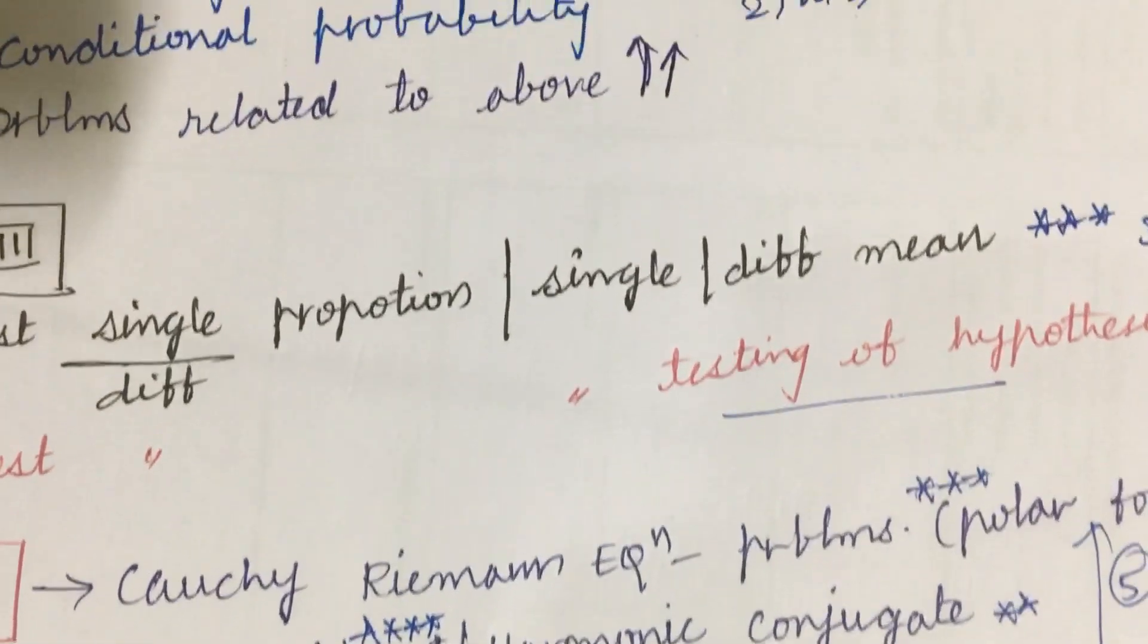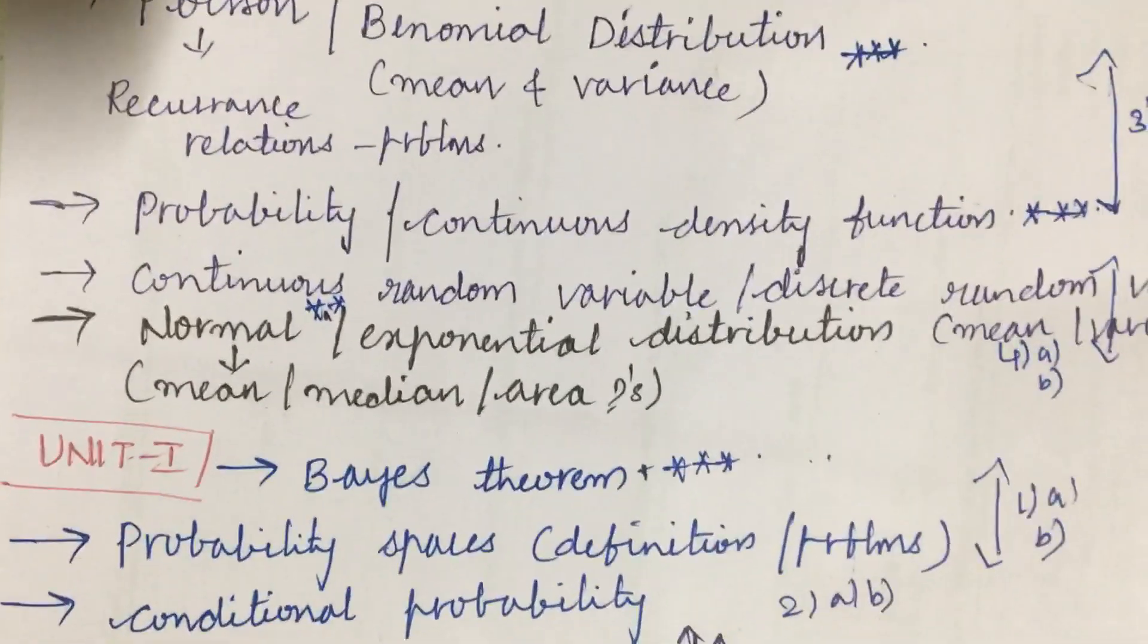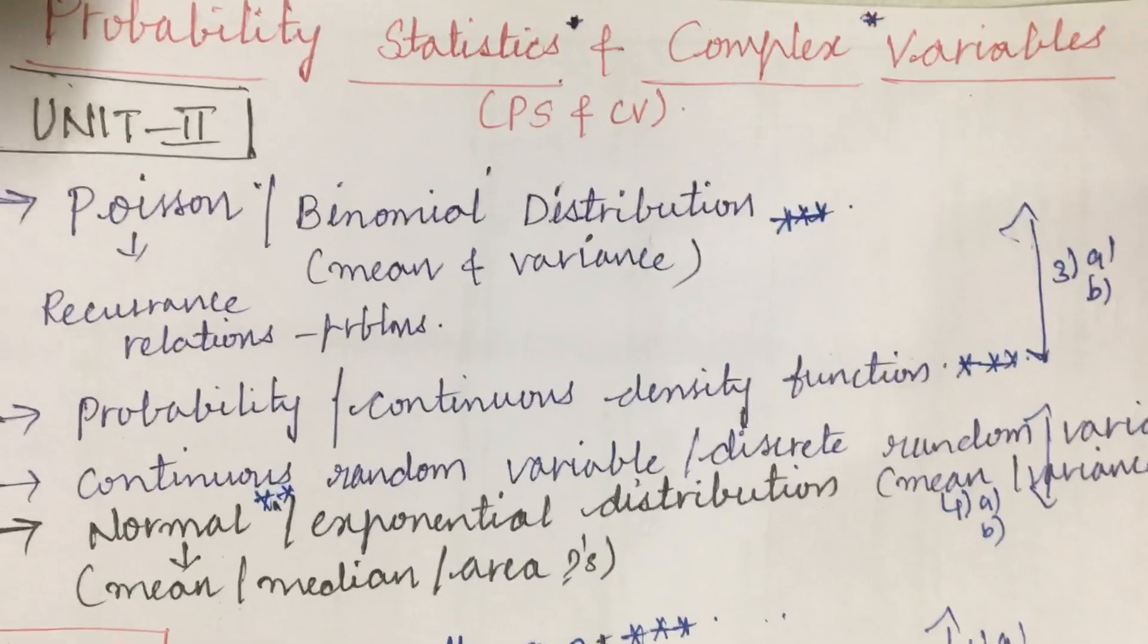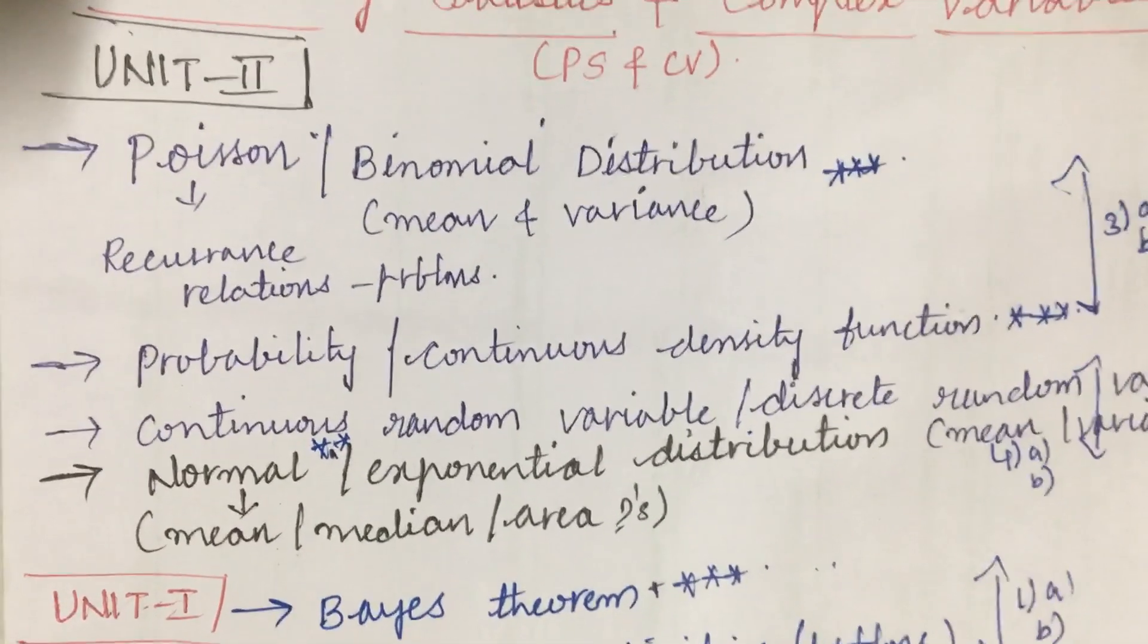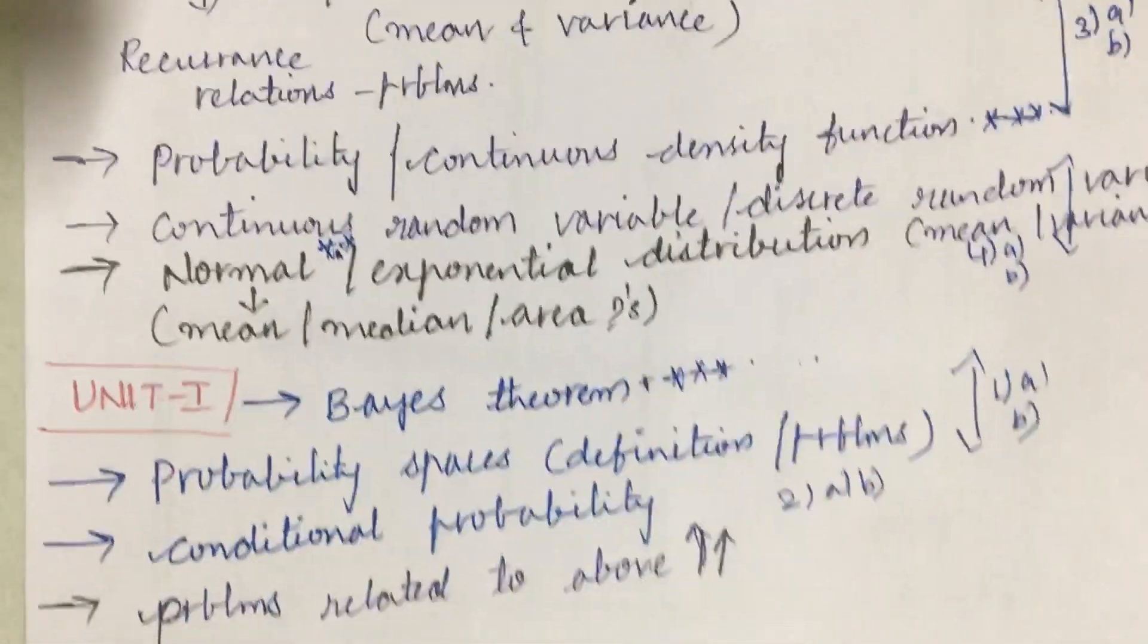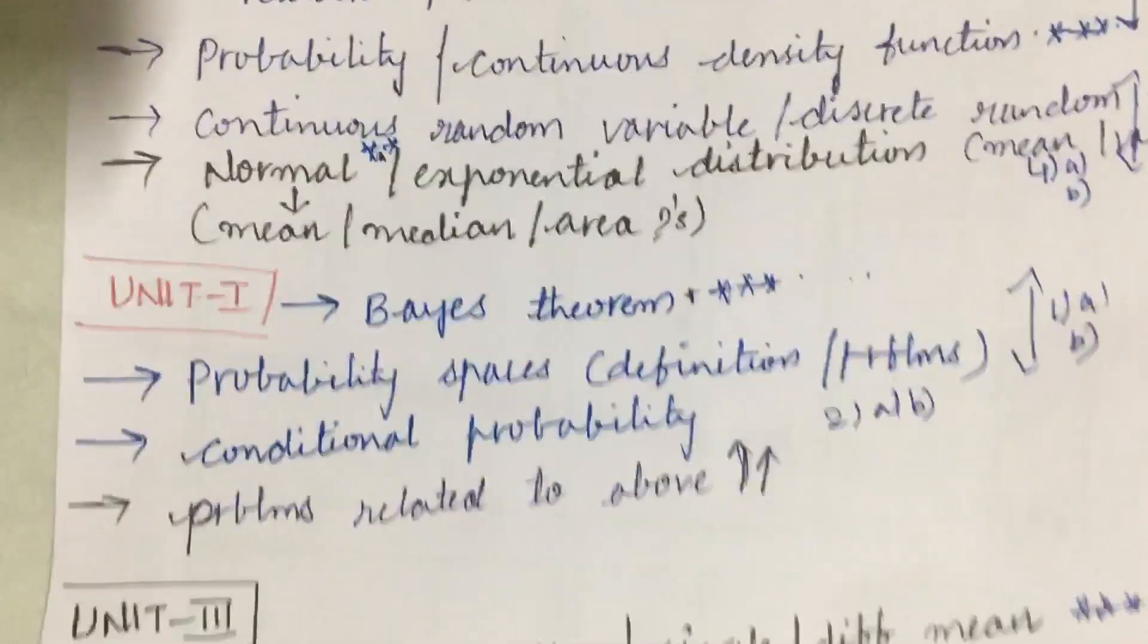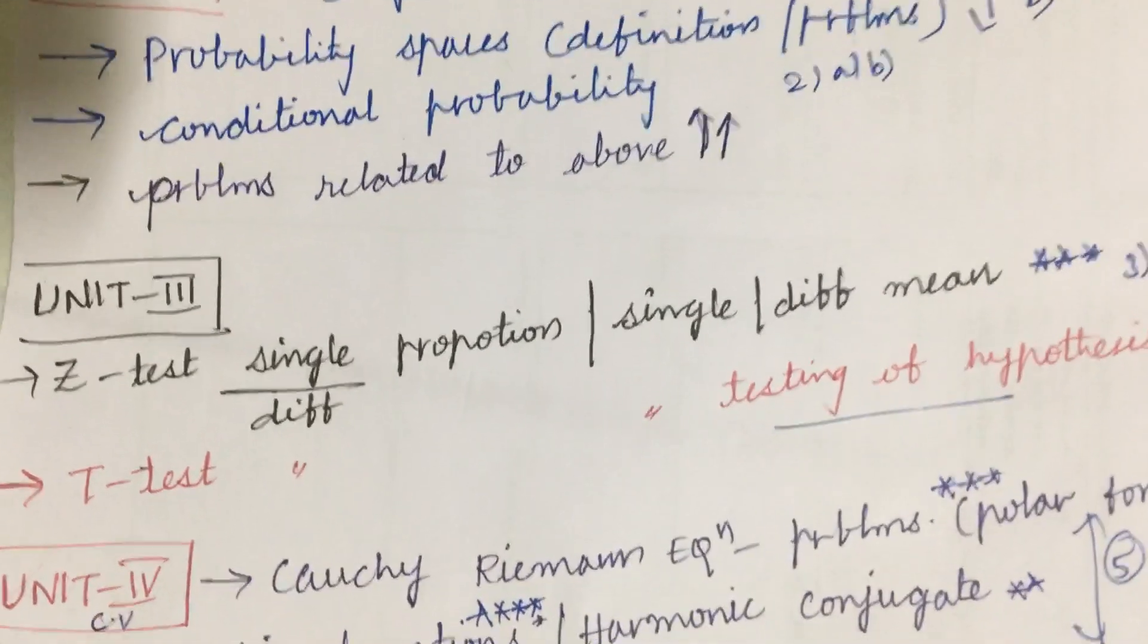Please do work out accordingly to score good marks as well as pass this course. As per the COVID pattern, 8 questions will be given of which you are supposed to work out 5. I can give an assurance that 7 to 8 questions will cover from these concepts for sure. Based on the concept you need to work out the relations, problems, and the theorems.